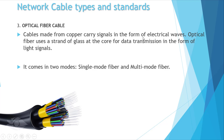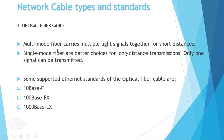Cables made from copper carry signals in the form of electrical waves. The part of an optical fiber cable used for carrying signals is made from glass, and signals are transmitted in the form of light. Optical fiber cables come in two modes: single mode and multi-mode fiber. Multi-mode fiber can carry multiple light signals together but only for short distances. For long-distance transmissions, single mode fiber is used, although it can carry only a single signal at one time. Some standards supporting ethernet over optical fiber are 10BaseF, 100BaseFX, and 1000BaseLX. Optical fiber transmission is the fastest means of transmitting data through guided media.